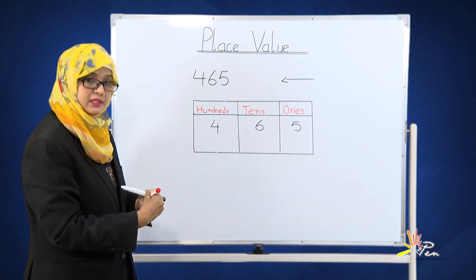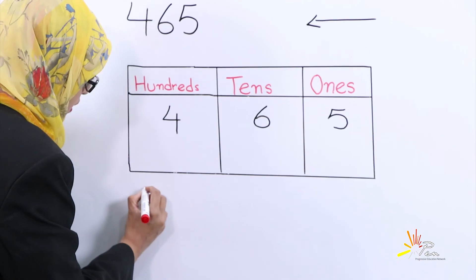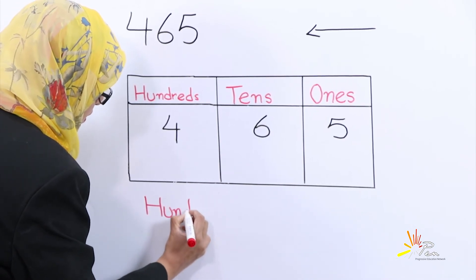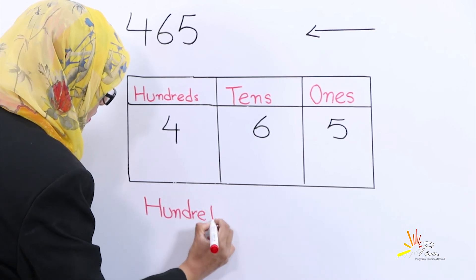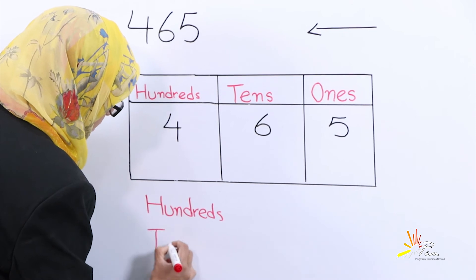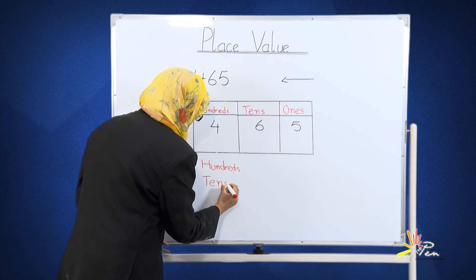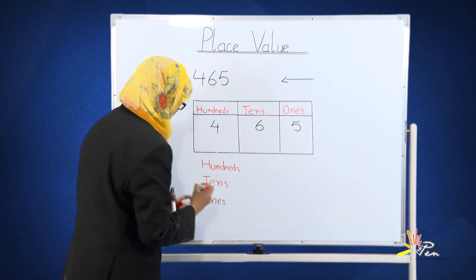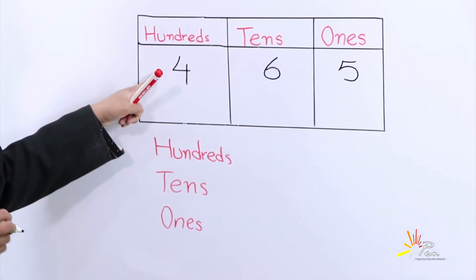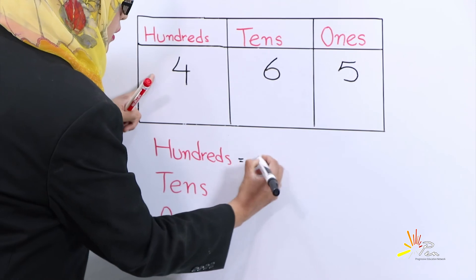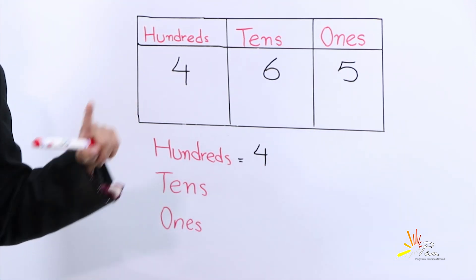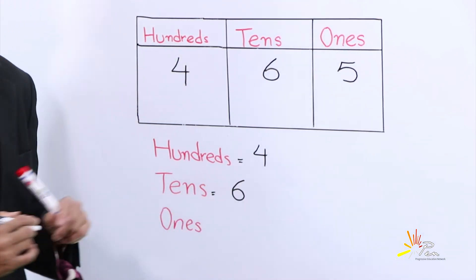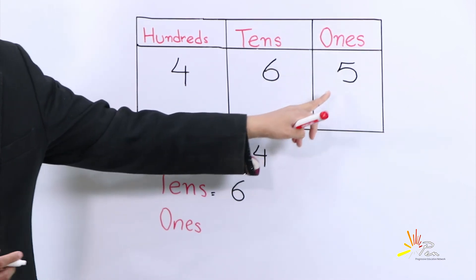For our convenience, we will write these numbers here. The number on the hundreds place is four. The number on the tens place is six. And the last number on the place of ones is five.